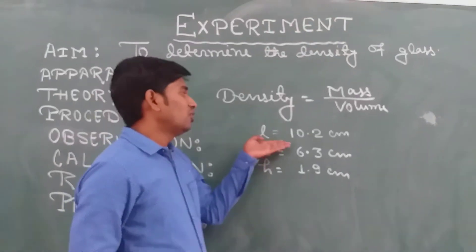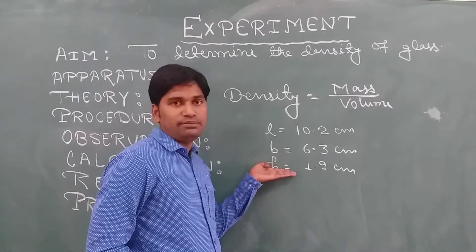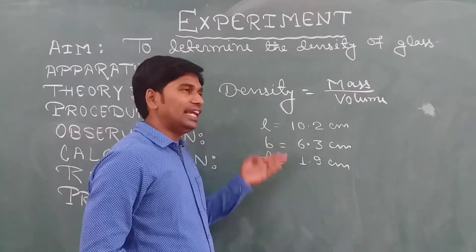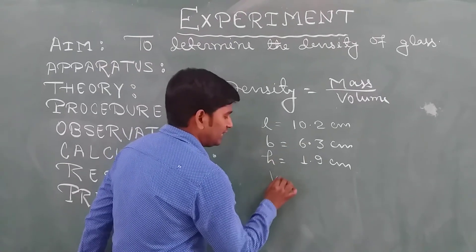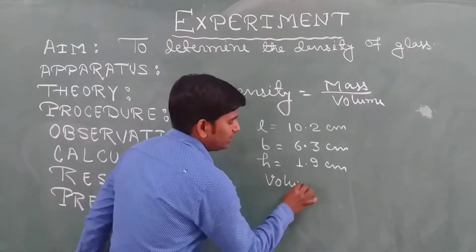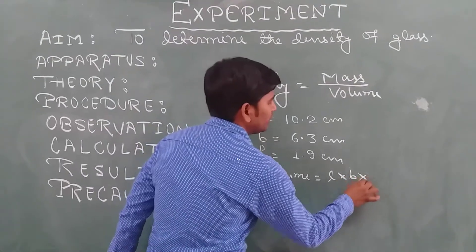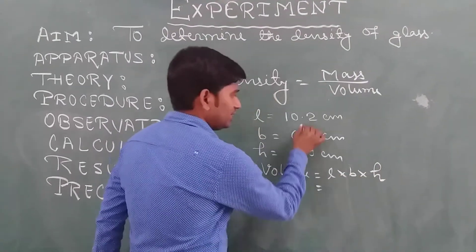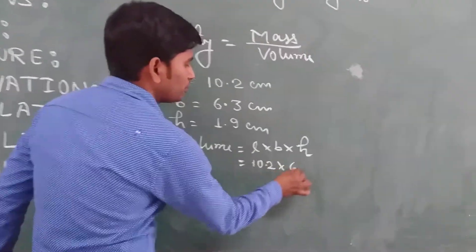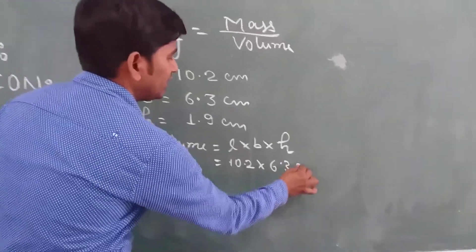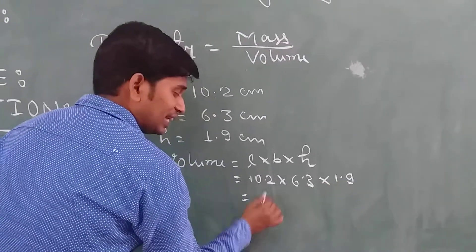As I said, I have calculated once only but we have to take measurements two or three times and then take the average. The volume is equal to length into breadth into height. Substituting the values: 10.2 into 6.3 into 1.9. After multiplying, we will get the volume in centimeter cube.